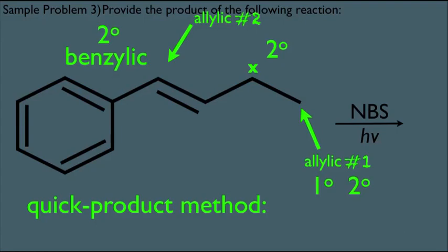Remember, we got allylic one gave us a primary and a secondary radical. And we see here allylic two gives us secondary benzylic and secondary, which, again, means that that is definitely more favorable. So your work here is done. You know to go in the allylic two direction here, which means, again,